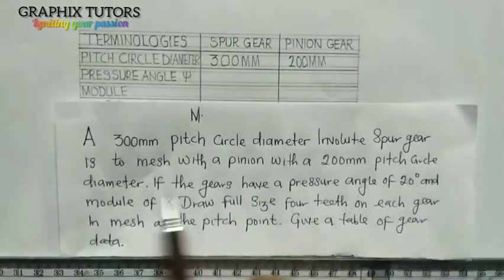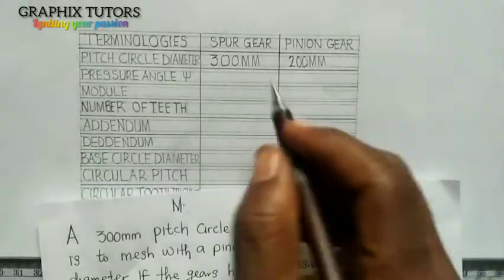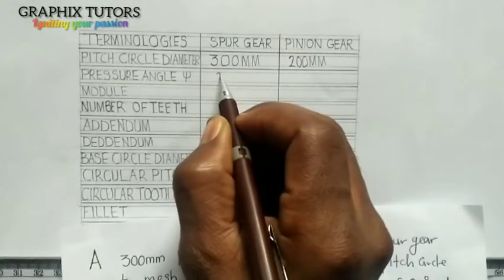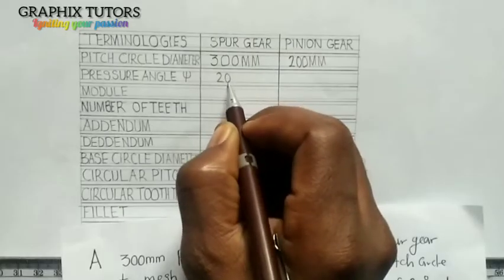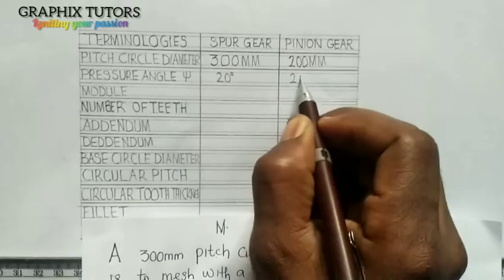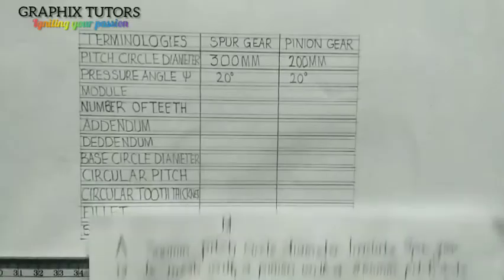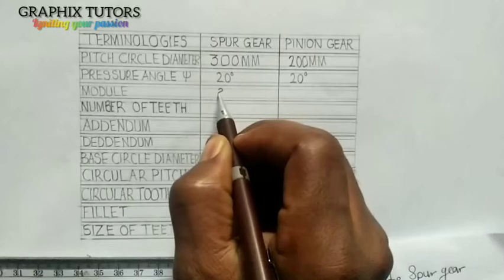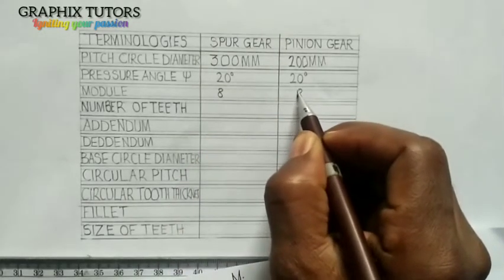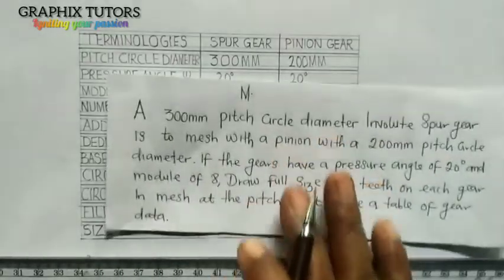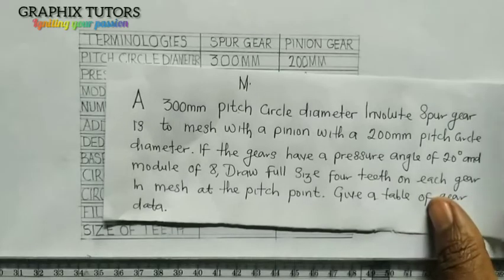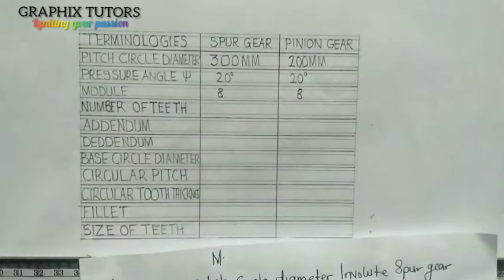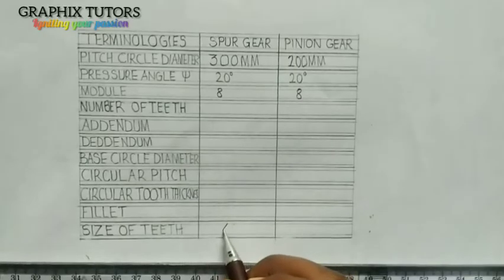The pressure angle is 20 degrees — both gears have the same pressure angle of 20 degrees. The module is the same for both of them, which is 8. The size of teeth is 4 for both of them.